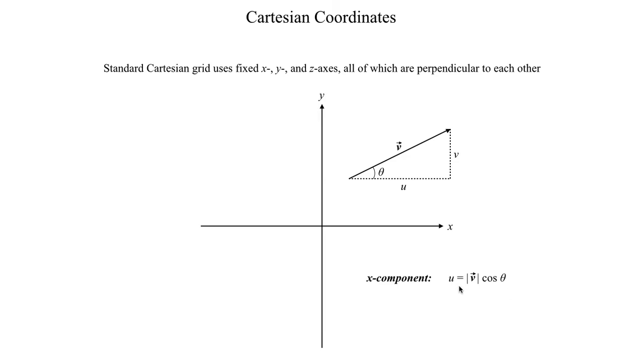The zonal component u is equal to the magnitude of the wind times the cosine of the angle. And then the y component, the meridional component, is equal to the magnitude of the wind times the sine of the angle. So if we're working in standard Cartesian space, then we have to break the wind component down into its x and y components.